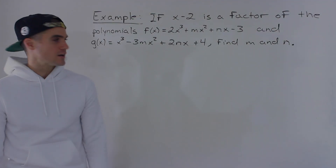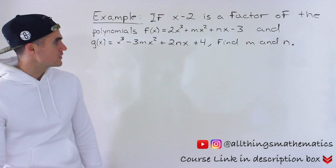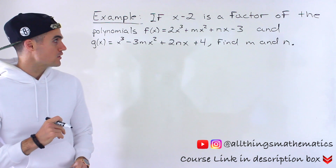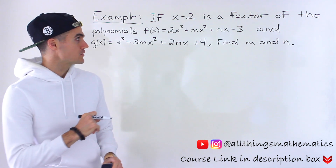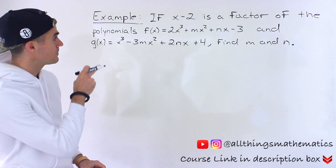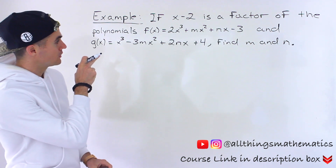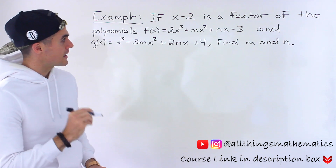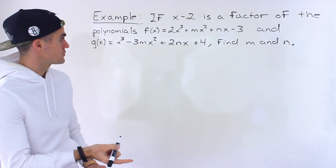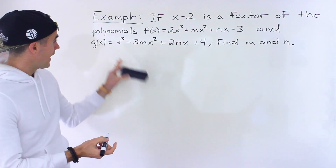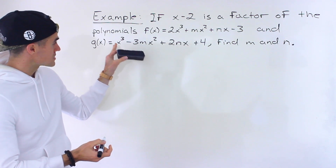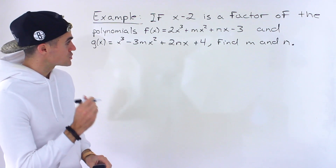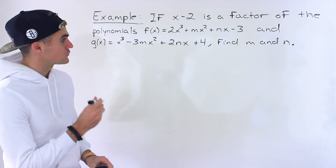Welcome back everyone, Patrick here, moving on to another question dealing with the factor and remainder theorem for polynomials. So if x minus 2 is a factor of the polynomial f of x equals 2x to the power 3 plus mx squared plus nx minus 3, and of this polynomial g of x equals x to the power 3 minus 3mx squared plus 2nx plus 4,